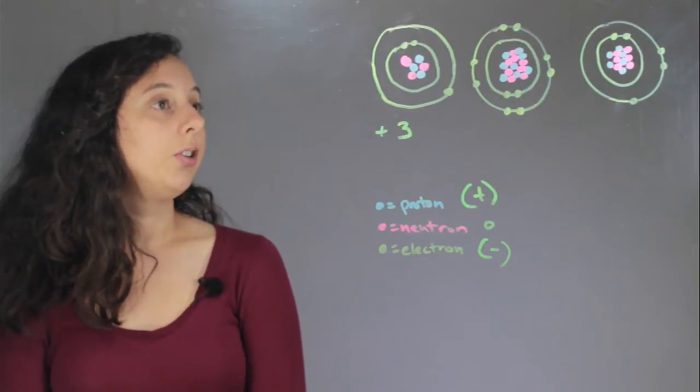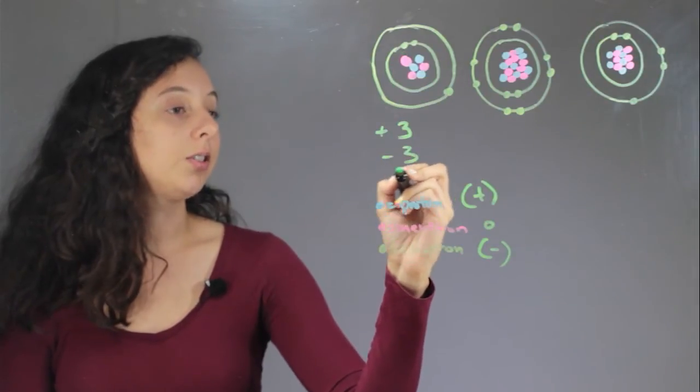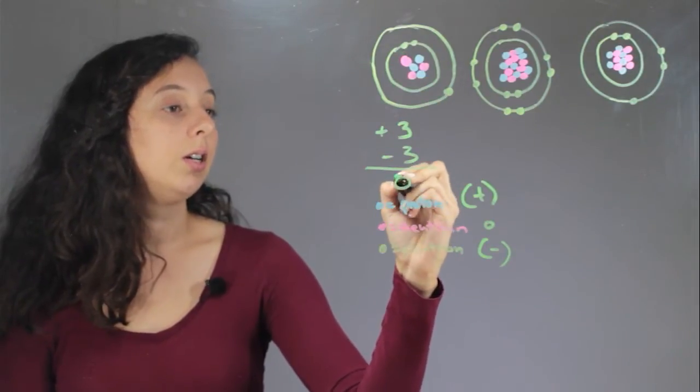Our electrons we have one, two, three, negative three. So our overall charge is zero. So we have an atom.